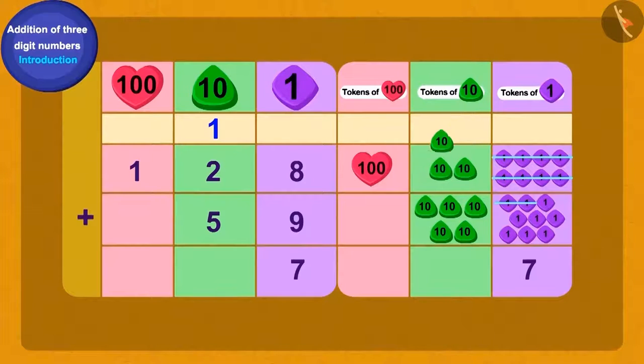We will write this 1 tens token along with the rest of the tens tokens. We can show this by writing a 1 over 2. This process is called carry-over. How many tens tokens do we have now?